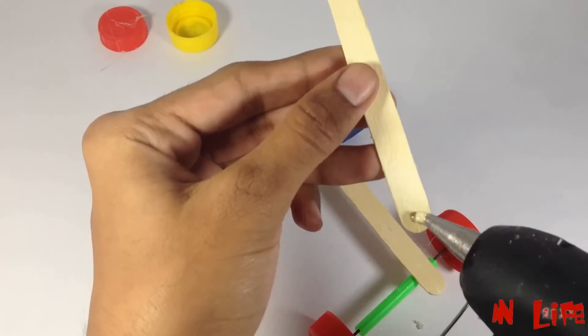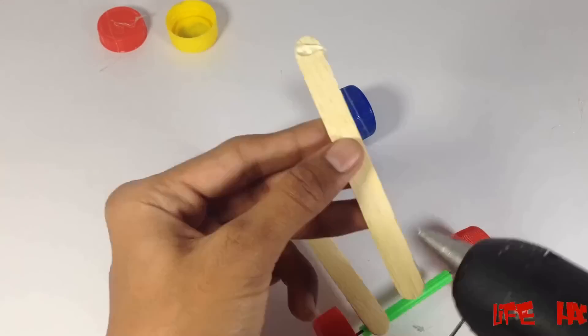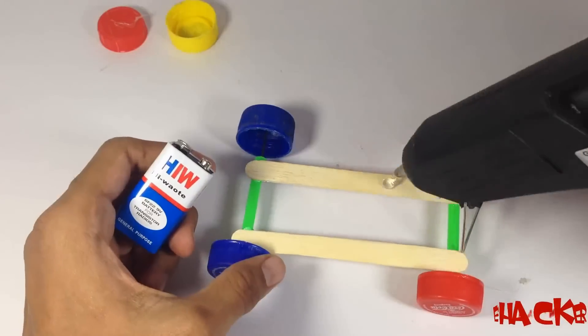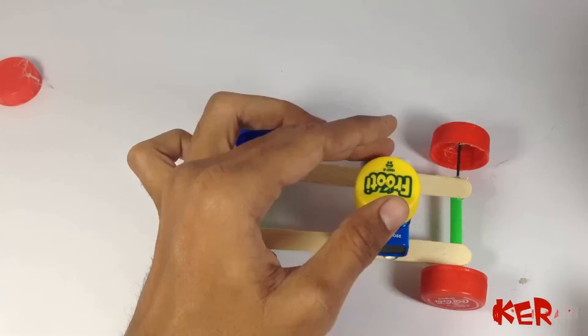Now stick the candy stick on the straw. Now fix the battery on the candy stick, and then stick bottle caps on it.